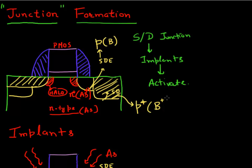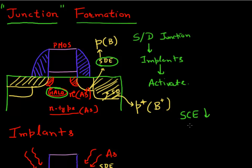The purpose of the halo implant and the source drain extension implant is to minimize short channel effects. We will discuss how these help in minimizing short channel effects in a later video, but for now, just assume that to minimize these short channel effects, we need this halo implant and this source drain extension implant.